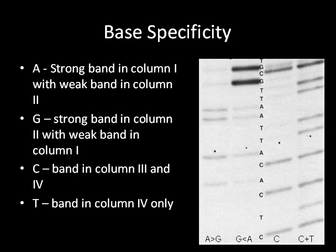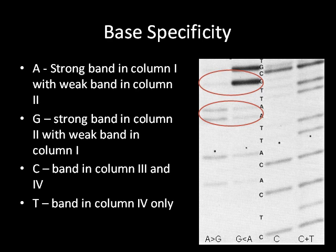Each column is specific for a base. A strong band in column 1 and a weak band in column 2 represent adenine. A strong band in column 2 with a weak band in column 1 represents guanine. A band in both columns 3 and 4 represents cytosine. Lastly, a band only in column 4 represents thymine.